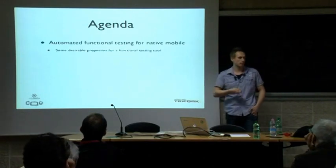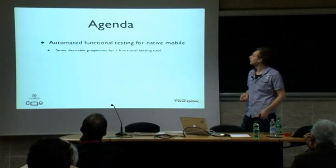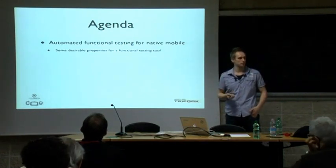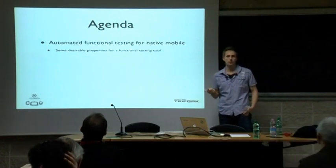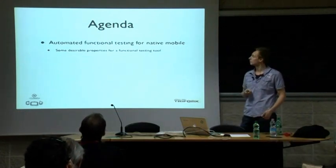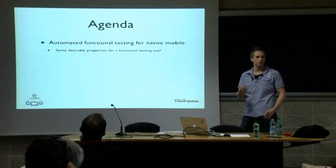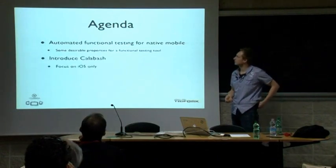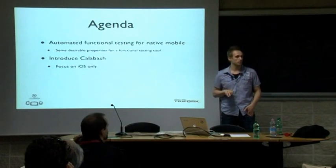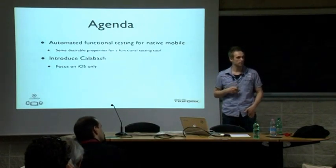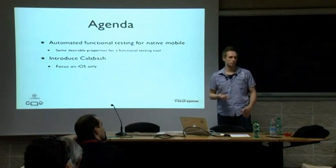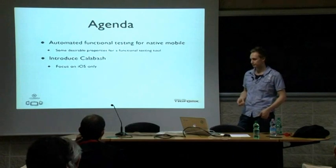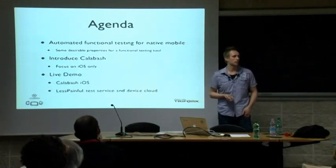So the agenda for today: I'm going to tell you what I mean by automated functional testing, and we're going to make a list of things I would like to have from a tool that does automated functional testing. I'll introduce Calabash, and I'm only going to focus on iOS, because this is where my expertise is — but most of the things I say also apply to Android. Not yet for Windows Phone, but maybe sometime in the future. And I'll give you a live demo of what Calabash does.